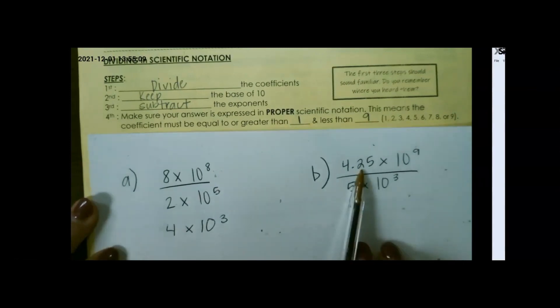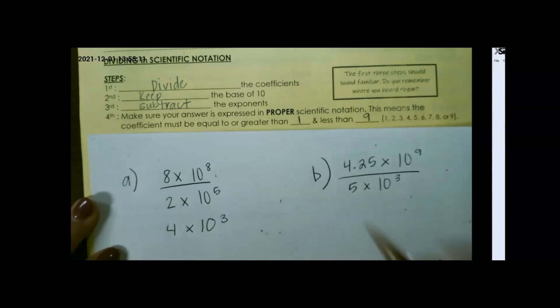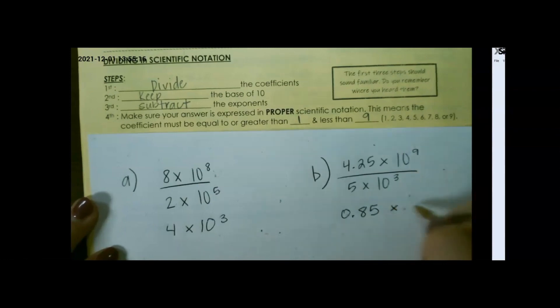Next, 4.25 divided by 5 gives me 0.85. 9 minus 3 is 6. This number needs to be larger because it's not between 1 and 9.